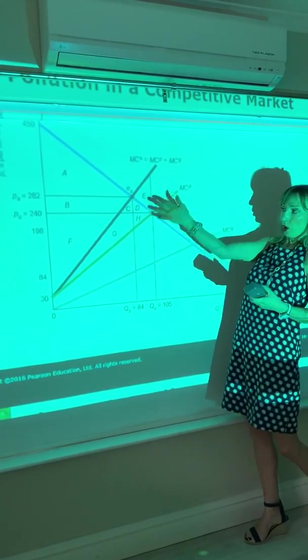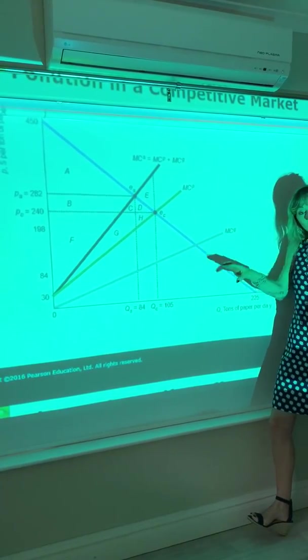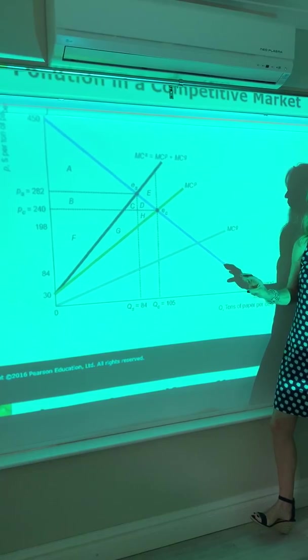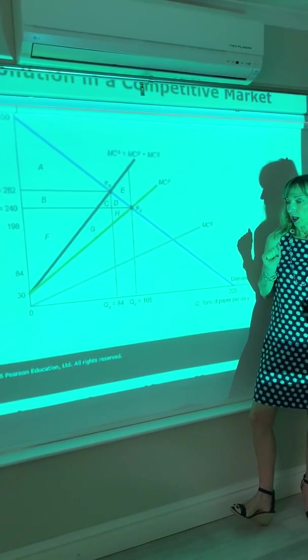And when you add that to consumer surplus, you get an idea of welfare, and you'll see that in the table in Perloff below this. It shows you that area.